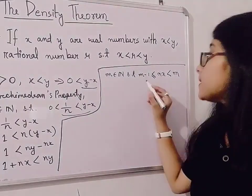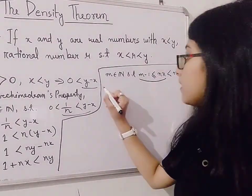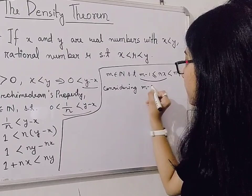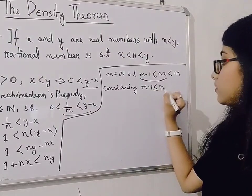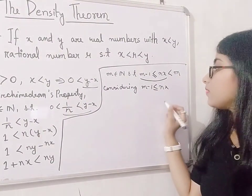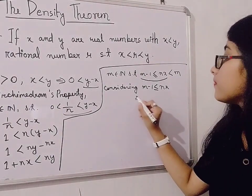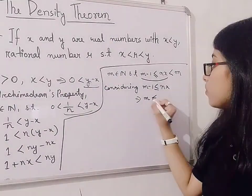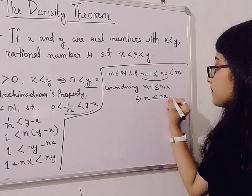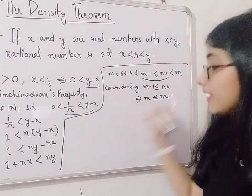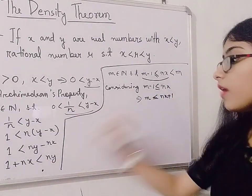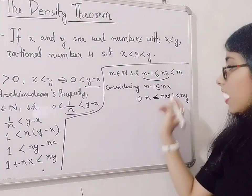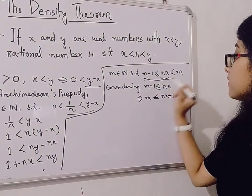Now considering m minus 1 is less than or equal to nx, we will consider this part. So look at both sides, we will add 1, so we will get m is less than nx plus 1. And we know here, nx plus 1 is less than ny, so we will write here ny. Now we have this part, so now we will consider nx is less than m.